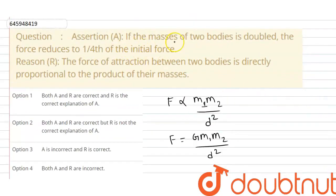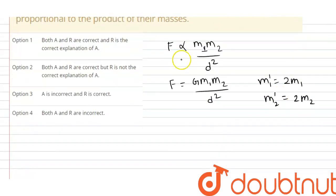So, abh humh dekhti hain, Assertion A. If the mass of two bodies is doubled. Hameh kaa gaya hai mass is M1 and M2 hai. Woh double ker diya gaya hai. That means, M1 dash is equal to 2 M1 and M2 dash is equal to 2 M2. Then the force reduces to one fourth of initial force. Jho, humhara initial force F hai. F is equal Z M1 M2 divided by D square.